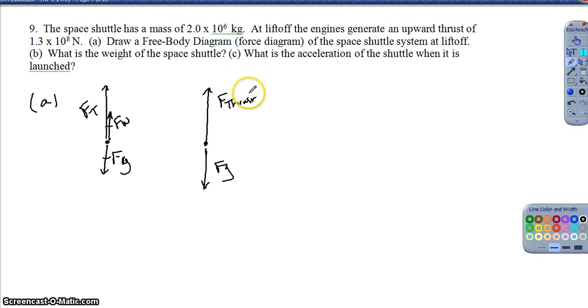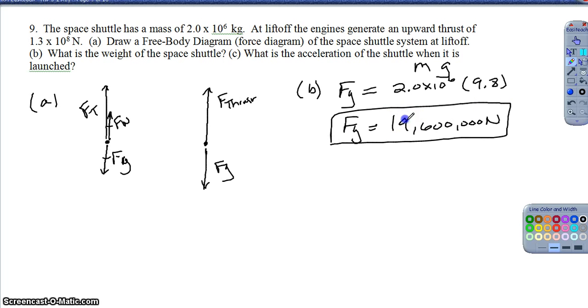For Part B, what is the weight of the space shuttle? Well, that's not too bad because they give me the mass of the space shuttle. So if I want to find the weight, it's just force of gravity. So it's just the mass, 2.0 times 10 to the 6th, and then I take that times the acceleration due to gravity. I'm just taking my mass times gravity. So the weight ends up being about 19,600,000 newtons.